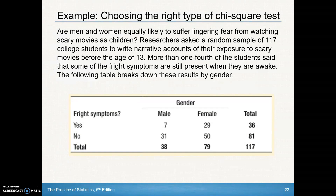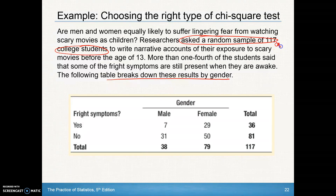Let's look at an example of choosing the right type of chi-square test. Are men and women equally likely to suffer lingering fear from watching scary movies as children? Researchers asked a random sample of 117 college students to write narrative accounts of their exposure to scary movies before age 13. They asked just one sample — that bell should go off that this is a test of independence.